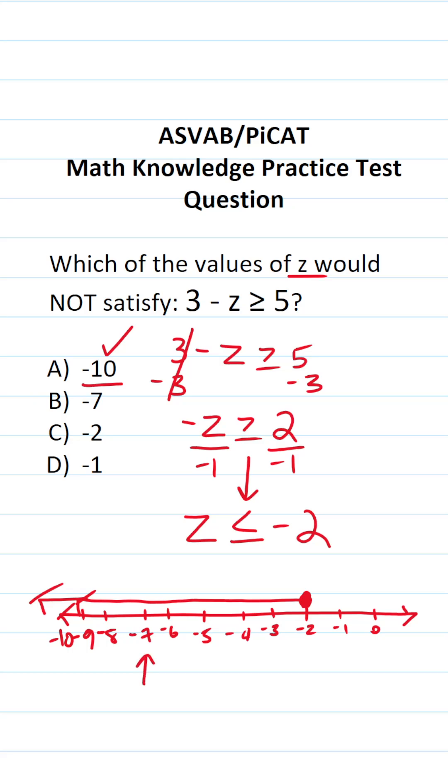Negative 7 is right here. You can see that it is included as our solution. Negative 2 is right here. It has that closed circle above it, so it's included.